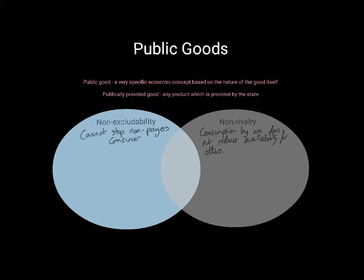One consumer deciding to consume a product doesn't in any way reduce the amount left for other people. The really important thing is that a public good must demonstrate both of these characteristics. For a product to be a true public good in an economic sense, it must demonstrate both non-excludability and non-rivalry. If it doesn't demonstrate both perfectly, we can't call it a public good.